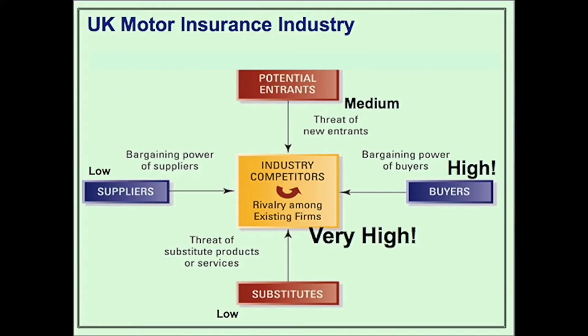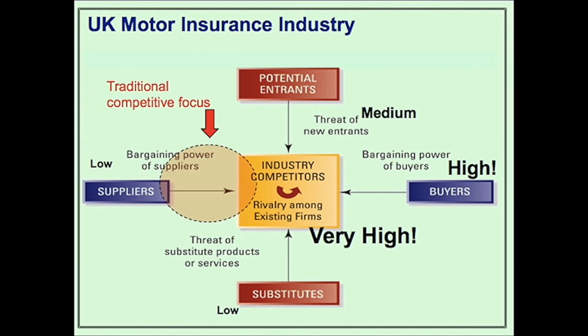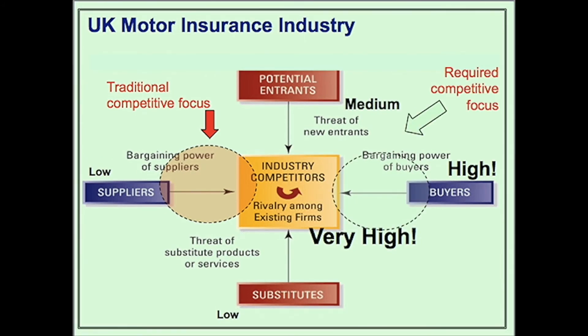The five forces analysis is not just about looking at each individual force — once you've assessed all five, step back and see what the whole framework is telling you. For the motor insurance sector, the threat of substitutes and bargaining power of suppliers were both low, and potential entrants medium, whilst pressure came from rivalry intensity and from buyers. Traditionally in the 1990s, insurers focused strategy on the supply chain and driving down costs through scale, but Porter's five forces analysis suggests the focus should have been on that interface with buyers — that was where the biggest issue was.